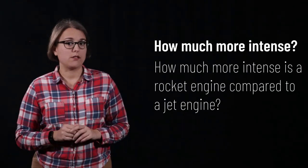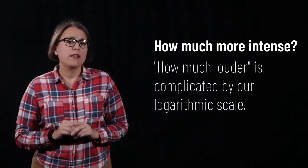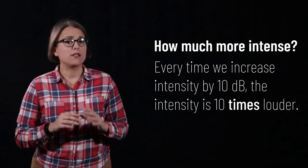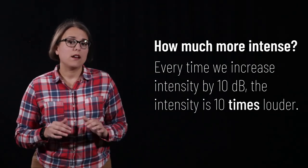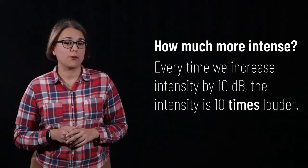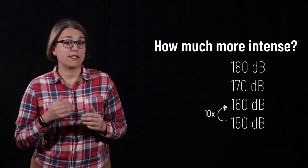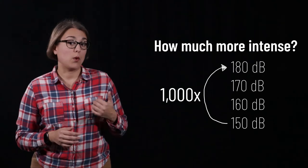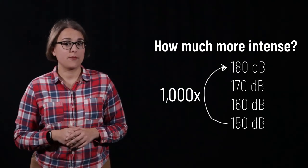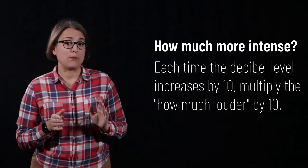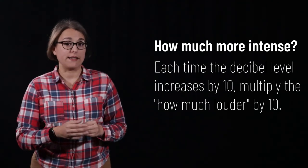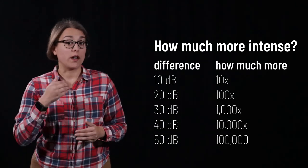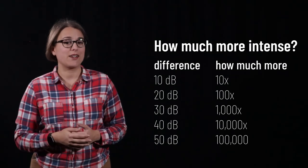How much more intense is a rocket engine compared to a jet engine? This question becomes slightly difficult on a logarithmic scale. Recall that the logarithm tells us the exponent on the number 10 — how many zeros are after the 1. A jet engine is 150 decibels. Something at 160 decibels is 10 times louder; at 170 decibels, 100 times louder; and the rocket engine at 180 decibels is 1,000 times more intense. Every time we increase the decibel value by 10, we multiply the intensity by 10. A difference of 10 decibels is 10 times louder, 20 decibels is 100 times louder, and 30 decibels is 1,000 times louder.